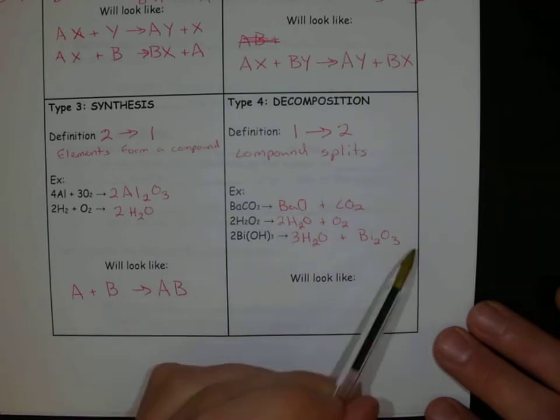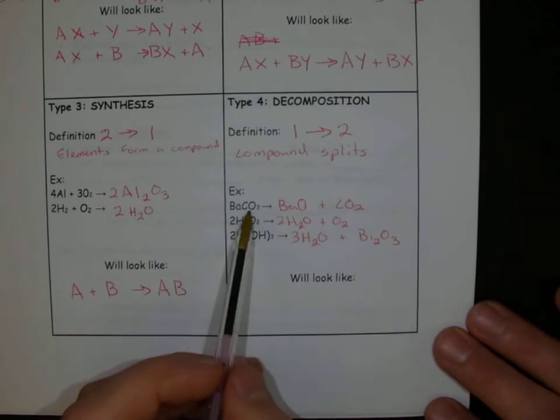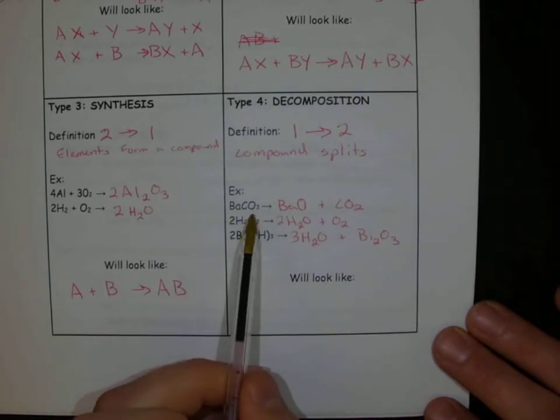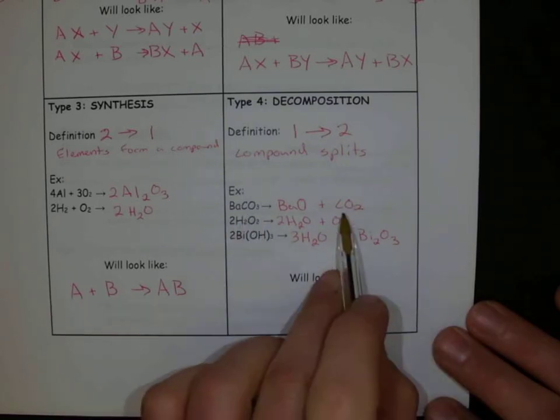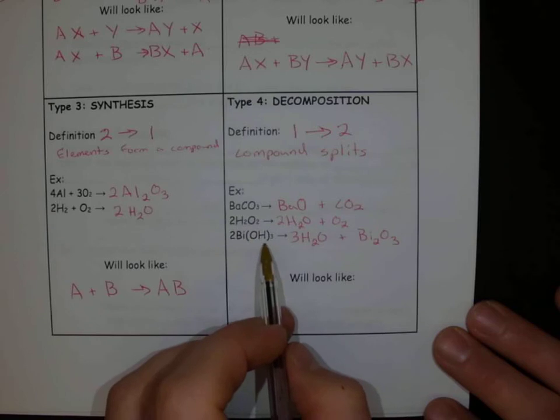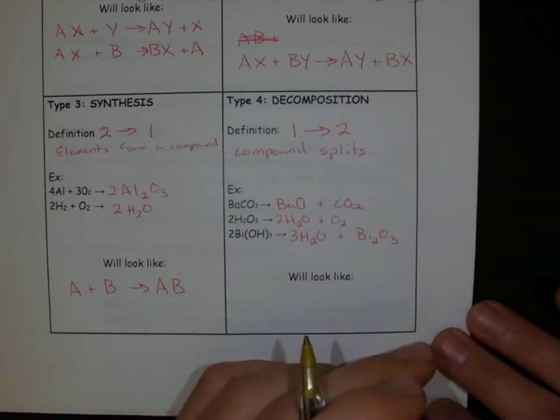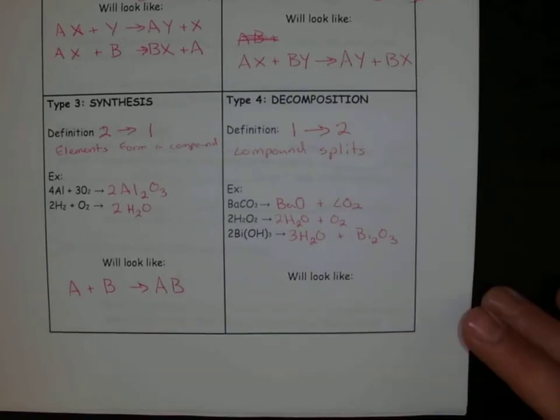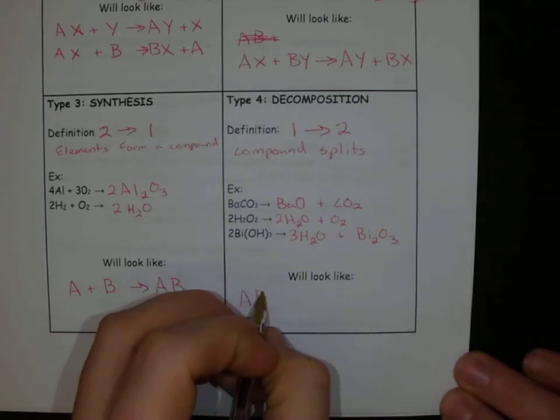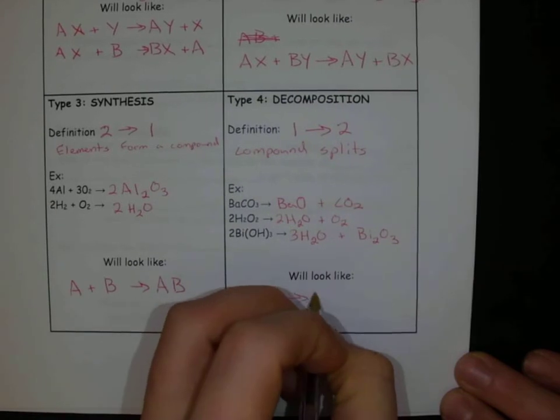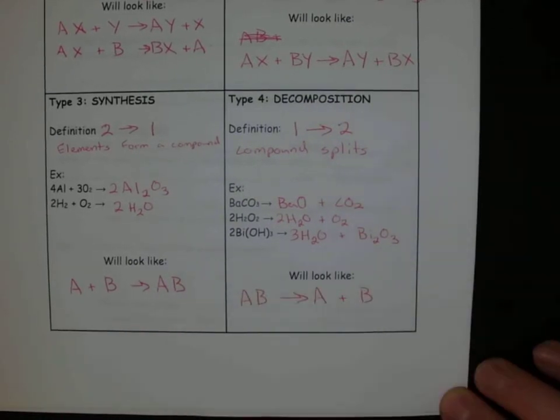So again, our decomposition reactions are a little bit hard, but certain polyatomics are going to break up into certain things like CO2. Carbonate to CO2. Or if we can form water, let's form water. Sometimes we might be able to form a gas, like N2 or O2 or H2. Those sometimes will be a product that we see as well. So oftentimes, really what this looks like is AB goes to A plus B.